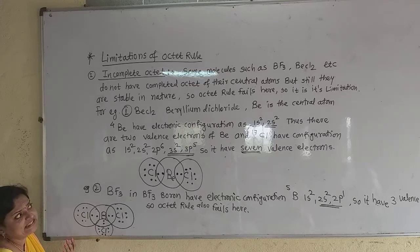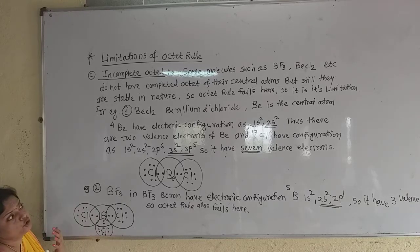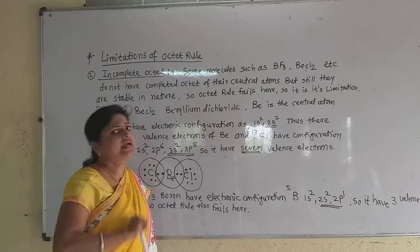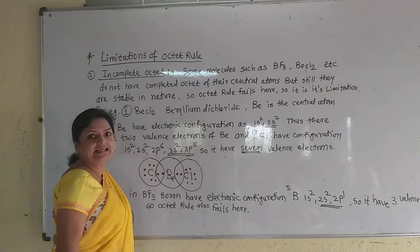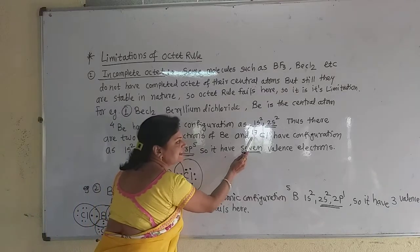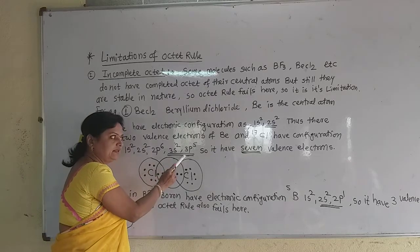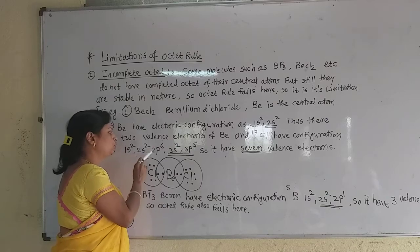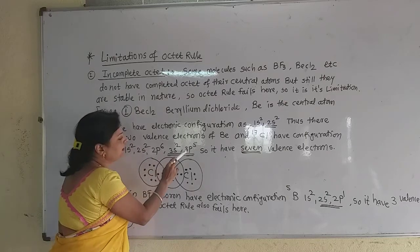Beryllium has atomic number 4 and the electronic configuration 1s2, 2s2. Now this 1s orbital is not the valence shell because the valence shell is the outermost shell. Beryllium has 2 electrons in its valence shell — 2s2. So there are 2 valence electrons in beryllium. Chlorine has atomic number 17. You must remember the electronic configuration. Chlorine has the electronic configuration 1s2, 2s2, 2p6, 3s2, 3p5 — 17 electrons.